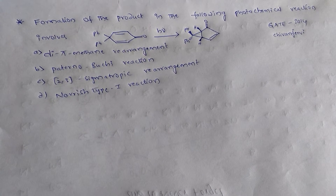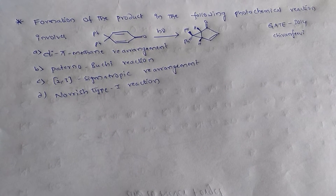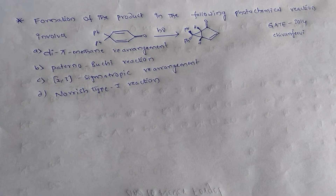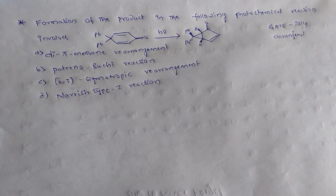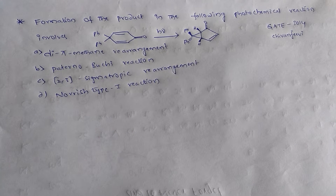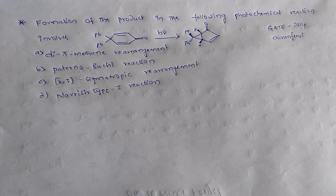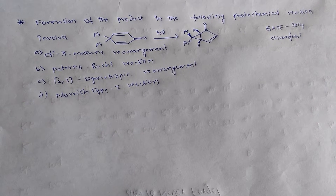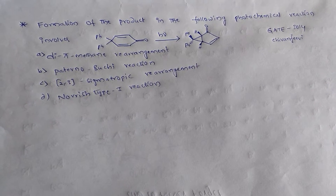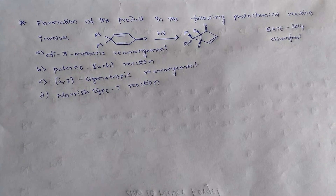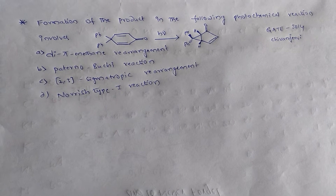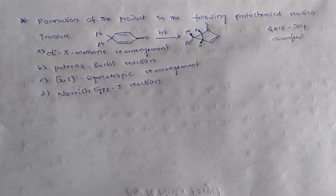This question appeared in GATE 2014. The question is: the formation of the product in the following photochemical reaction involves. That is the reaction and we have four options.